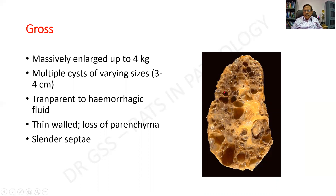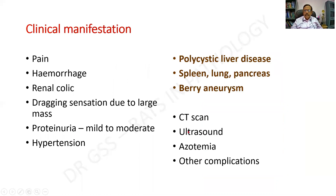There are multiple cystic spaces — some very small, some up to 4 cm in diameter. Each cyst can be either transparent or hemorrhagic, filled with clear or hemorrhagic fluid. The walls are thin with loss of parenchyma, and there will be slender septa separating the cystic lesions. Clinical manifestations include pain, hemorrhage, hematuria, renal colic, a dragging sensation from the large mass, proteinuria, hypertension, and ultimately the patient can progress to renal failure.